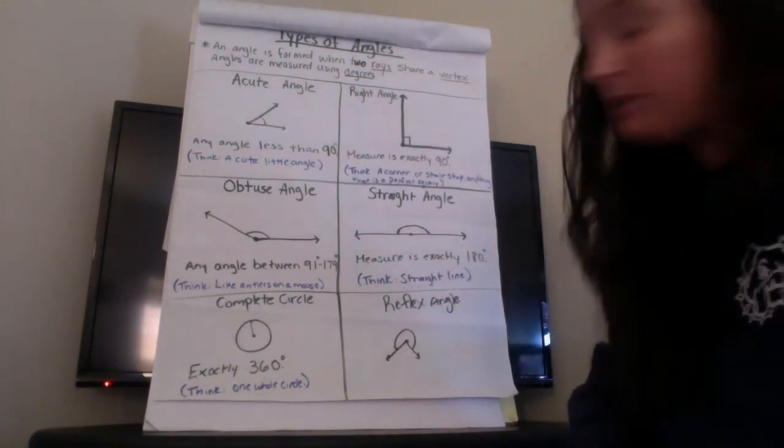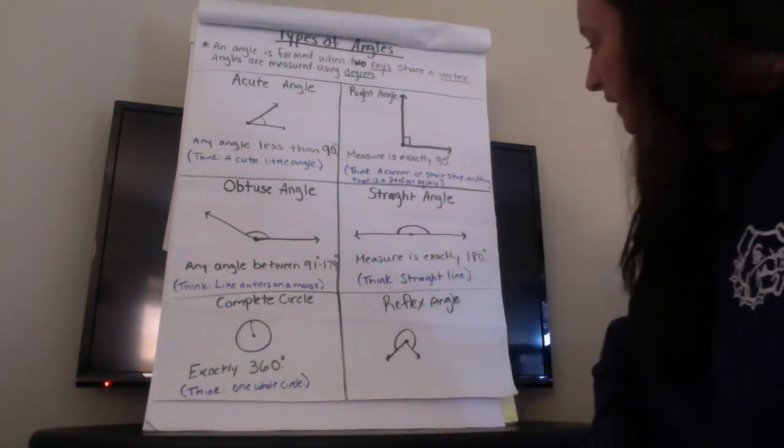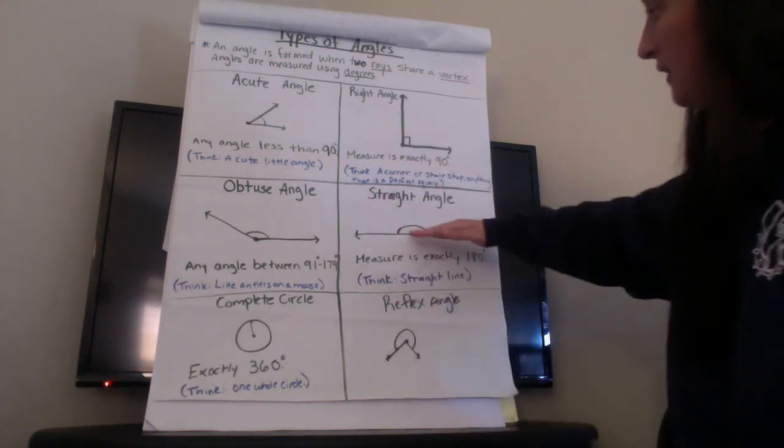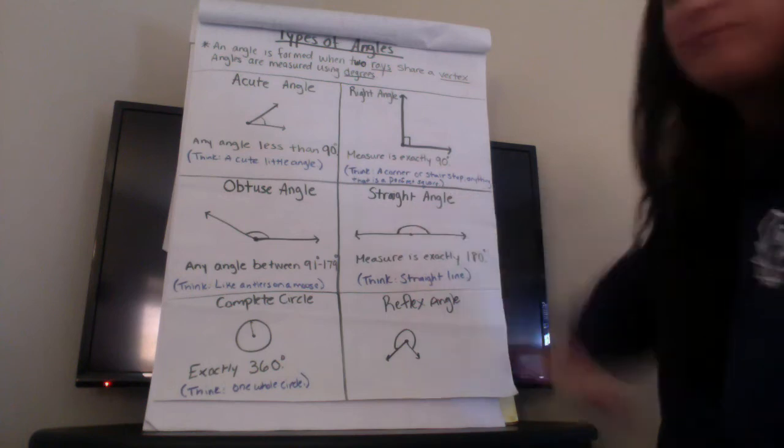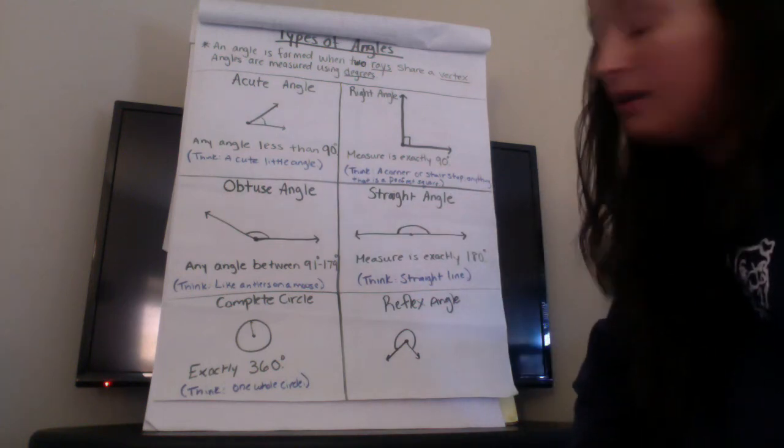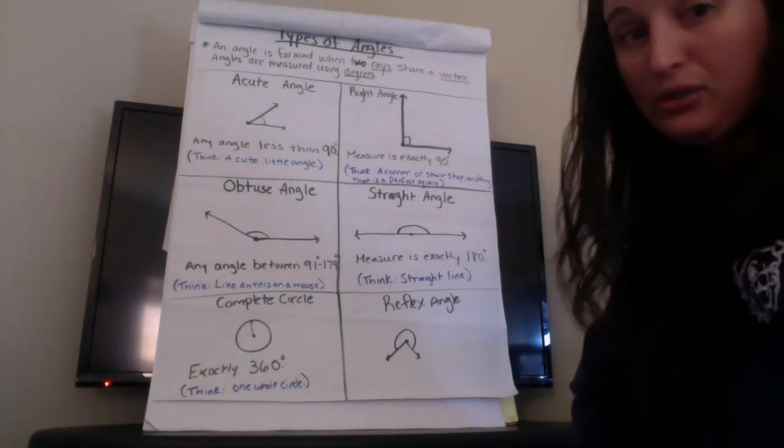A straight angle, it's simply a straight line. It's equal to 180 degrees and it's a perfect straight line. Even if one of these rays was a little up it would no longer be a straight line. I would call that an obtuse angle because that would be a little less than 180 degrees.